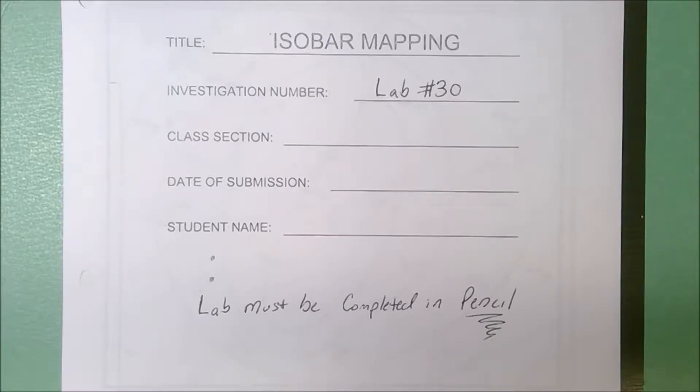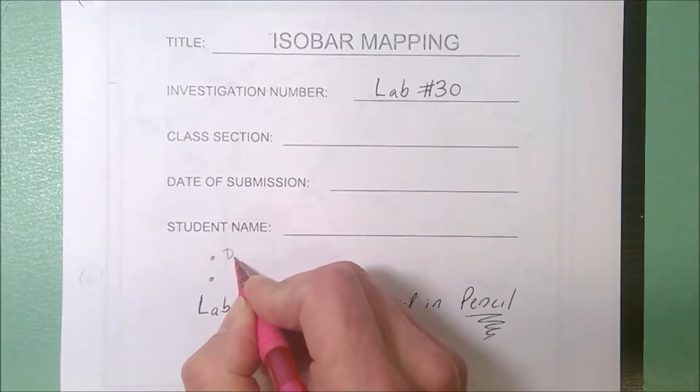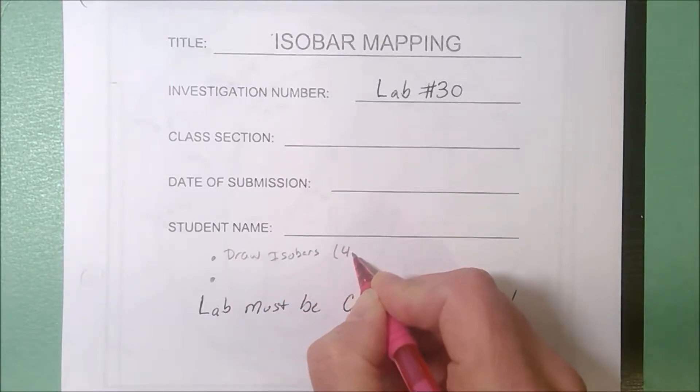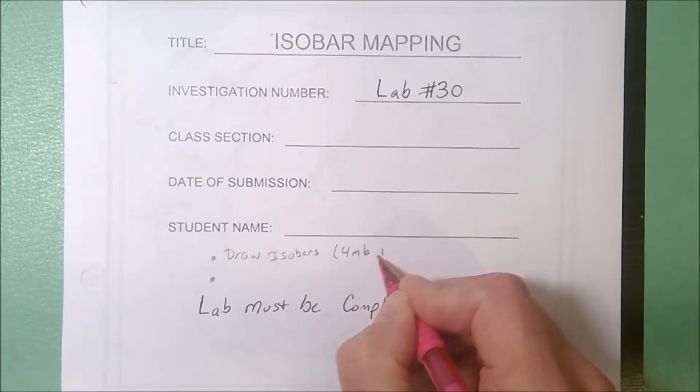Now there are a couple of skills that you will be doing with this lab. One thing that you have to do is you have to correctly draw isobars, and you'll see that on weather maps they tend to use a four millibar interval.